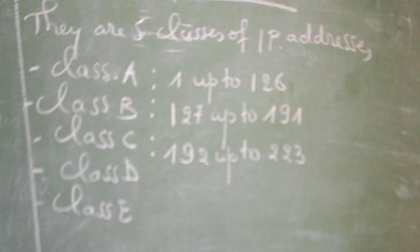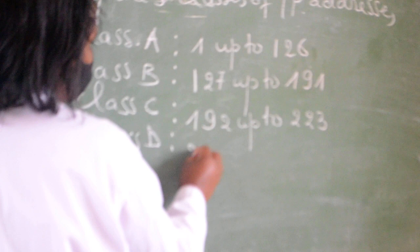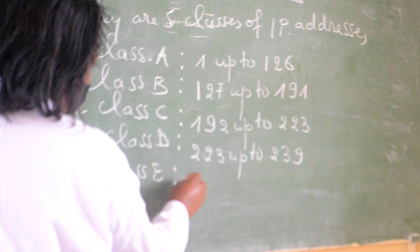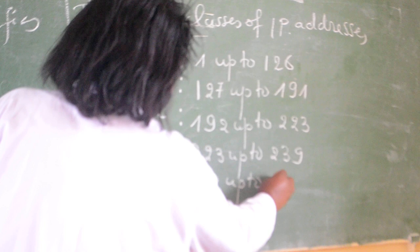Class C starts from 223 up to 239. Class E starts from 240 up to 255.